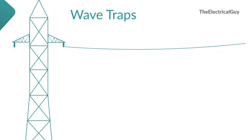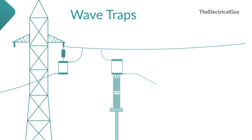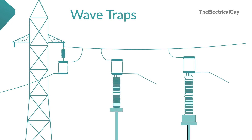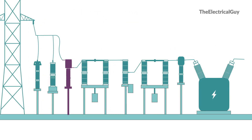You may see different ways of mounting wave traps. They can be mounted on the gantry, on a separate support structure, or on the capacitive voltage transformer. With the help of a coupling capacitor or CVT, these high frequency signals can be transmitted or received by a communication device.